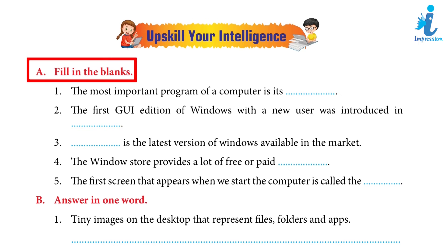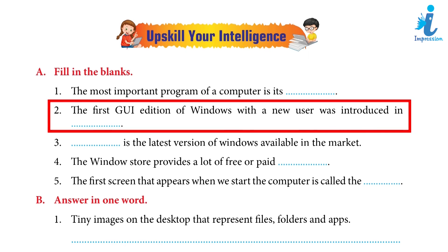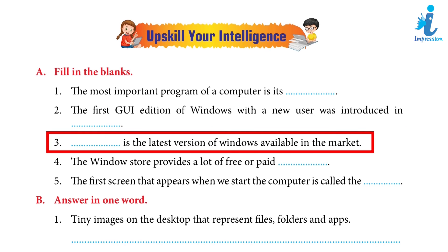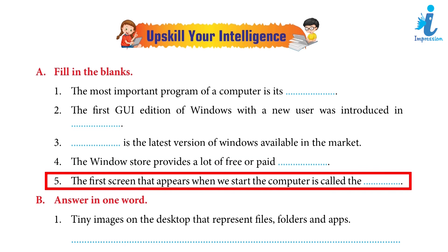Upskill Your Intelligence — Fill in the Blanks: 1. The most important program of a computer is its operating system. 2. The first GUI edition of Windows with a new user interface was introduced in 1995. 3. Windows 10 is the latest version of Windows available in the market. 4. The Windows Store provides a lot of free or paid applications. 5. The first screen that appears when we start the computer is called the desktop.